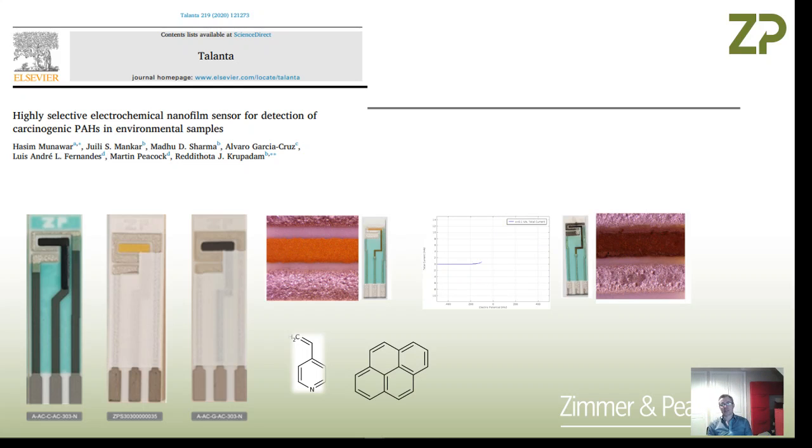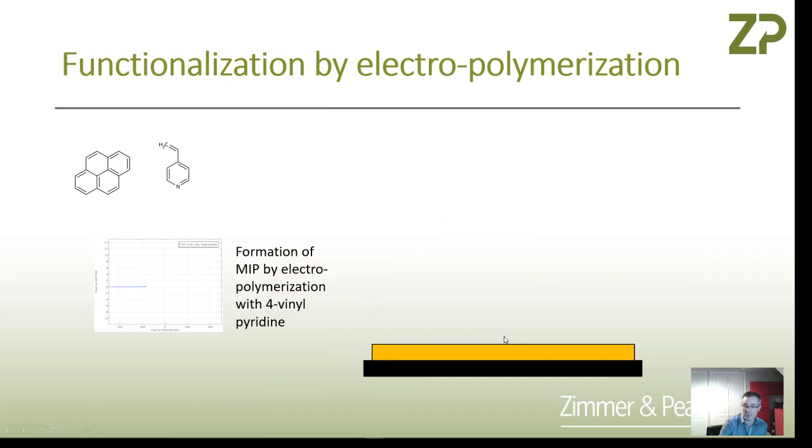He's taken a gold electrode and electropolymerized 4-vinyl pyridine onto the surface in the presence of pyrene. The 4-vinyl pyridine polymerizes and forms around the pyrene template, leaving pockets and pores. Let me use the next slide to illustrate that a bit more.